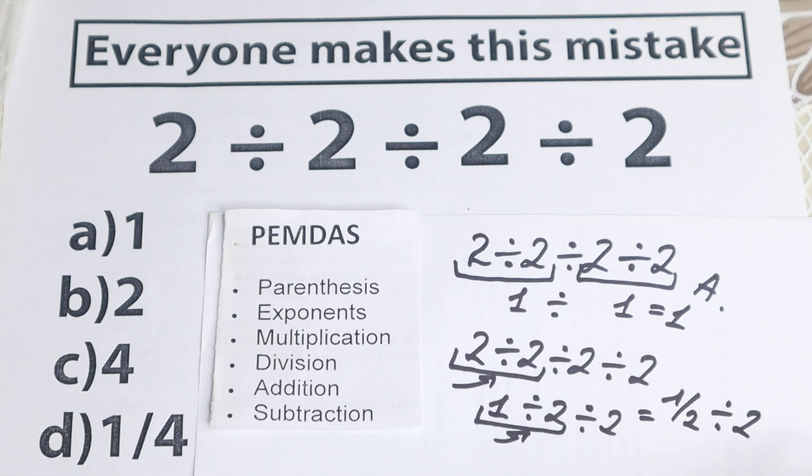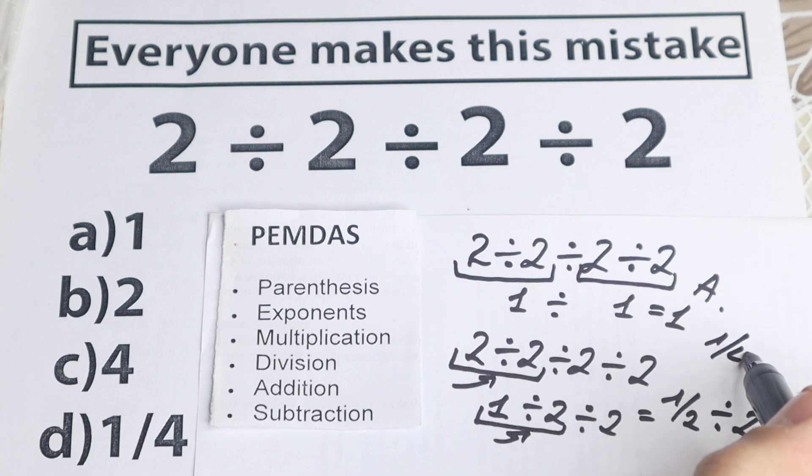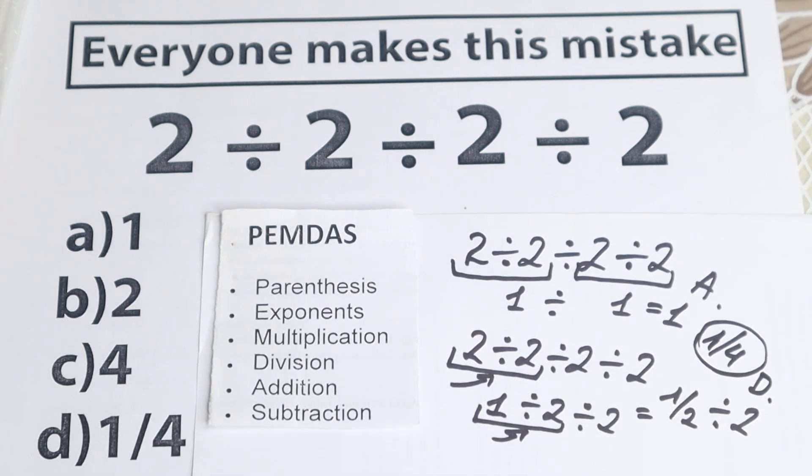So as a result, 1 half divided by 2, this is 1 fourth, and as you can see, this is not option A. This is option D is a correct answer to this interesting problem.